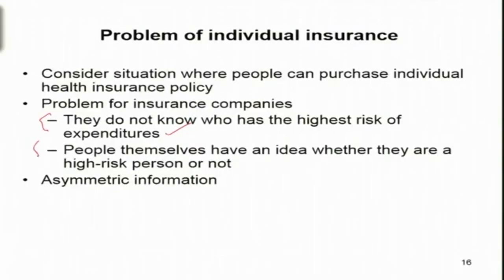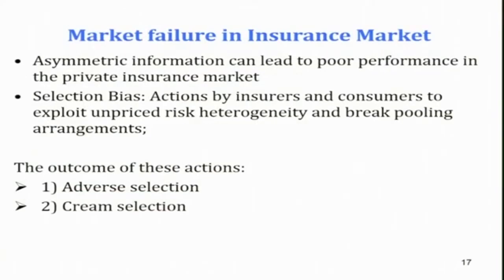So simply, what we see here is that between insurance companies and prospective customers, there is asymmetric information about health risk. Health risk is the parameter where we can observe asymmetric information. Because of this asymmetric information, it can lead to market failure in the insurance market — it can lead to poor performance in the private insurance market.